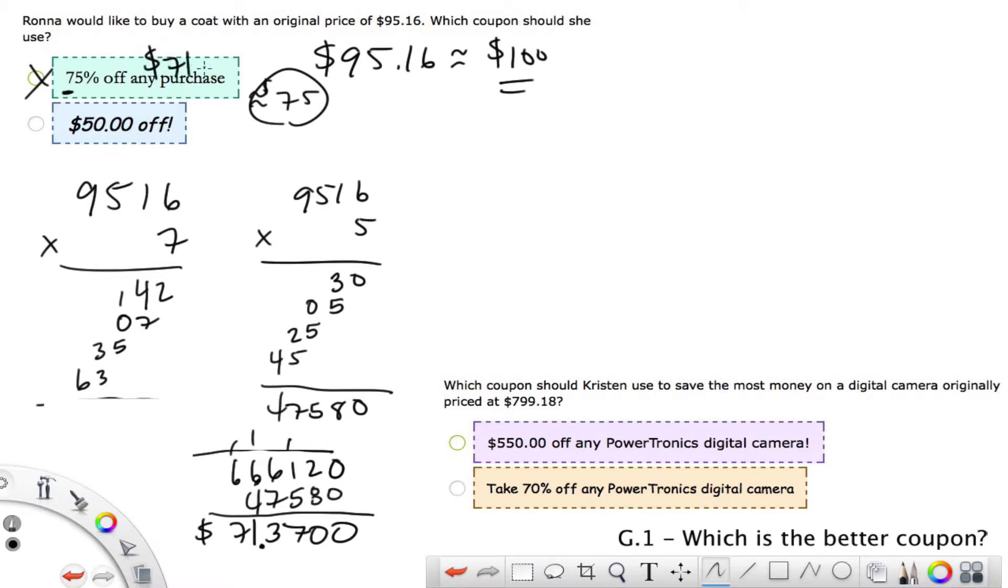This is a savings of $71.37, way better than $50. But again, we knew that immediately from our estimation. But if you wanted an exact answer, now you know it. We're going to do the same idea here. We got 70% off or $550 off of $799.18. We're just going to do the same thing. We're going to round this thing up to 8, this is so close to 800.